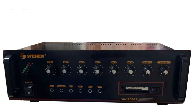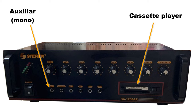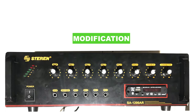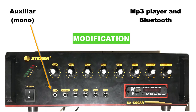The modification we're going to make is to use the auxiliary input to connect a Bluetooth module. Currently it has a cassette player, but we are not going to use the cassette player input because it has very low impedance and it's going to sound very low. We'll internally connect the Bluetooth module to the auxiliary input, remove the cassette player, install the Bluetooth module, and connect it.